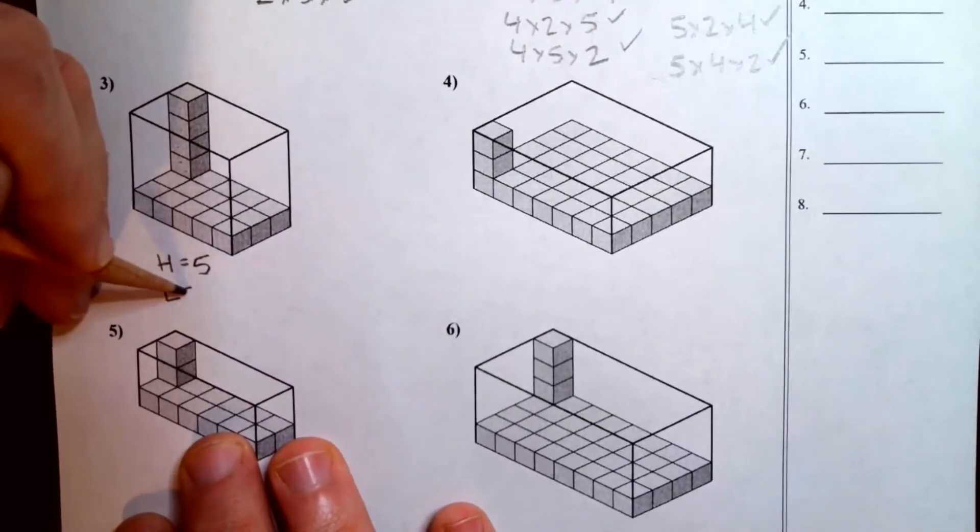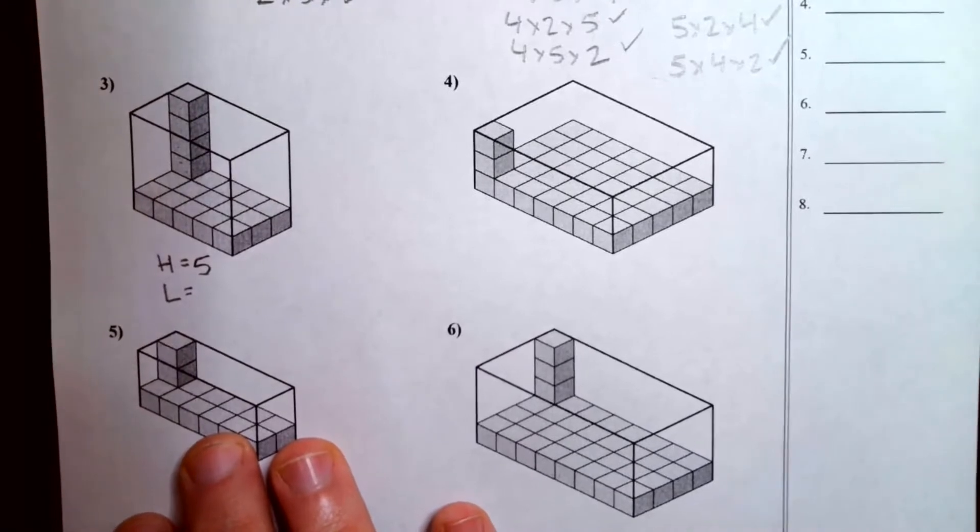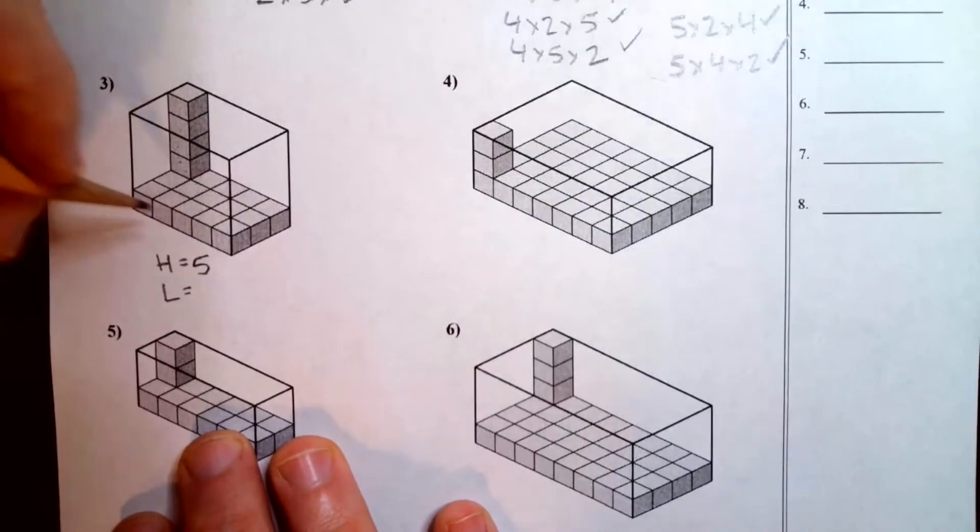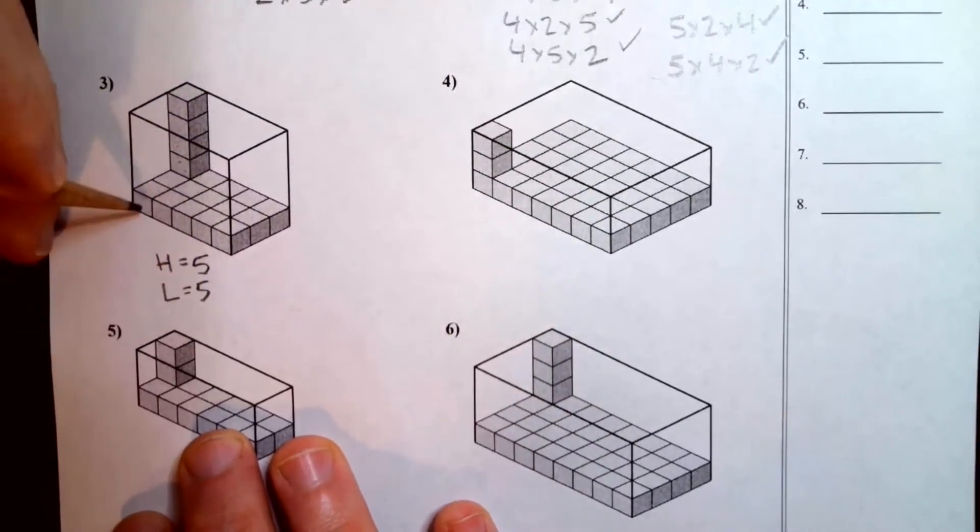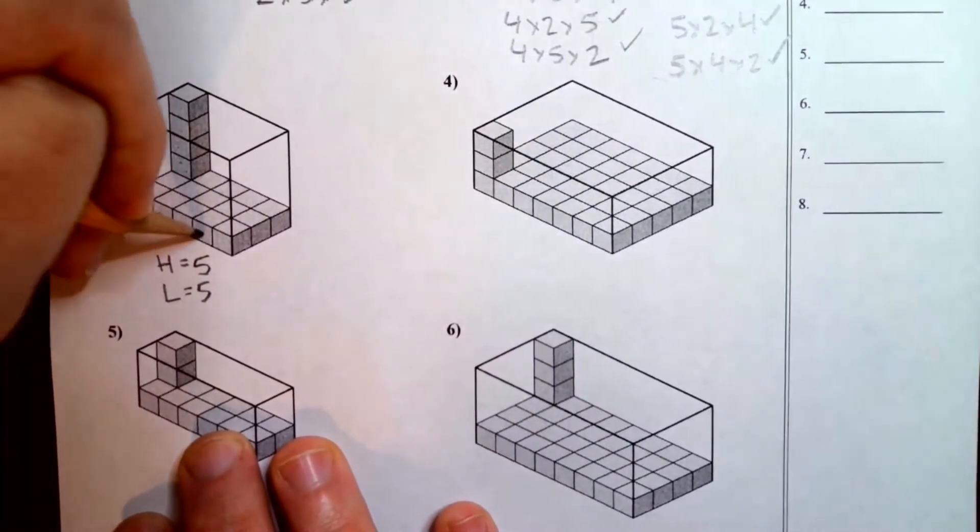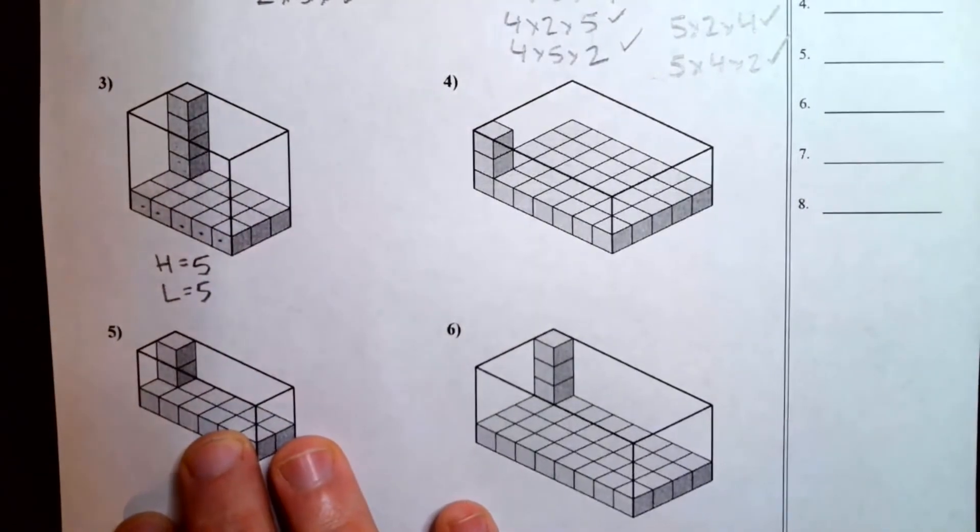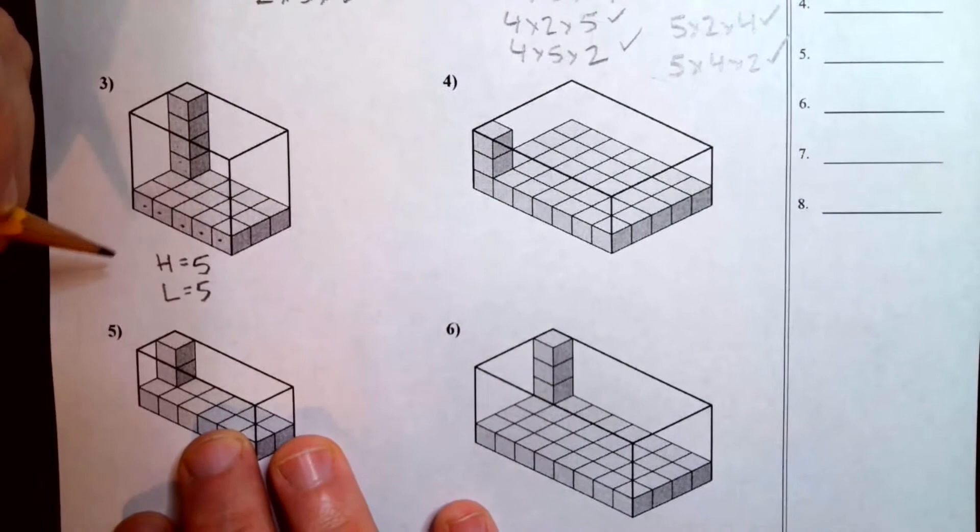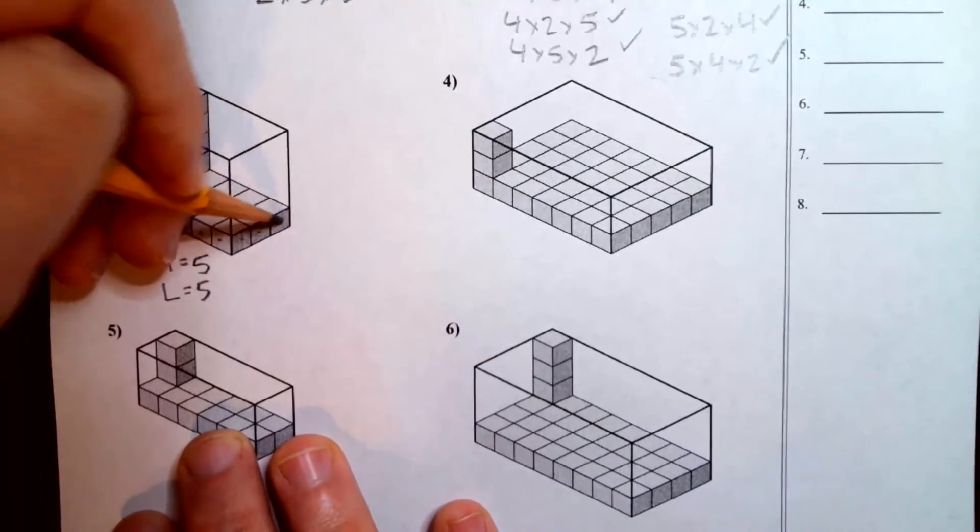How about the length? Which, how many cubes are on the longest side? It's also five. One, two, three, four, five. And then the last side, the shortest side is the width. And what is the width? The width is three, one, two, three.